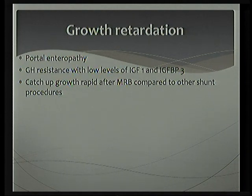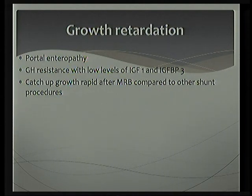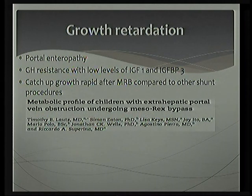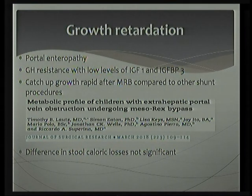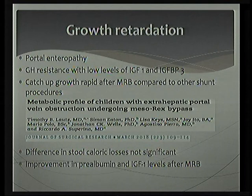Growth retardation is very commonly encountered in these patients. The initial theory proposed was portal enteropathy; later, people identified growth hormone resistance due to low levels of insulin-like growth factor 1 and insulin-like growth factor binding protein 3. Catch-up growth is seen especially after mesorex bypass compared to conventional portosystemic shunt surgeries. A landmark study evaluated the metabolic profile of children undergoing mesorex bypass, finding no significant difference in stool calorie losses before or after surgery, refuting portal enteropathy as the primary cause. Improved prealbumin and IGF levels following mesorex bypass support growth hormone resistance as the primary reason.